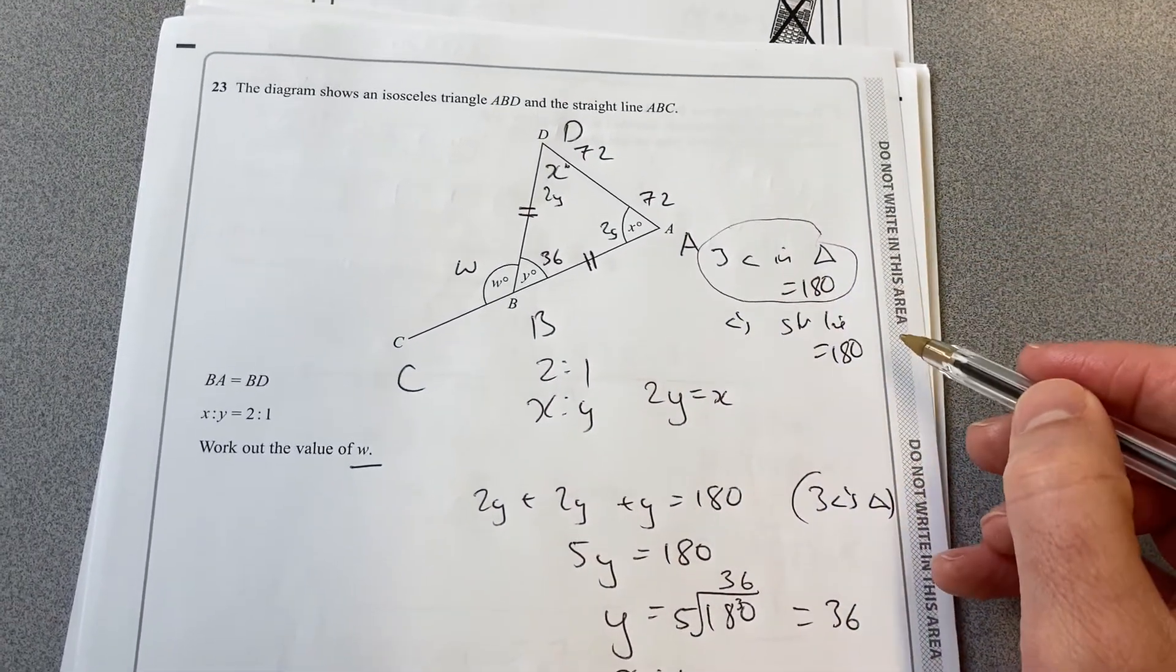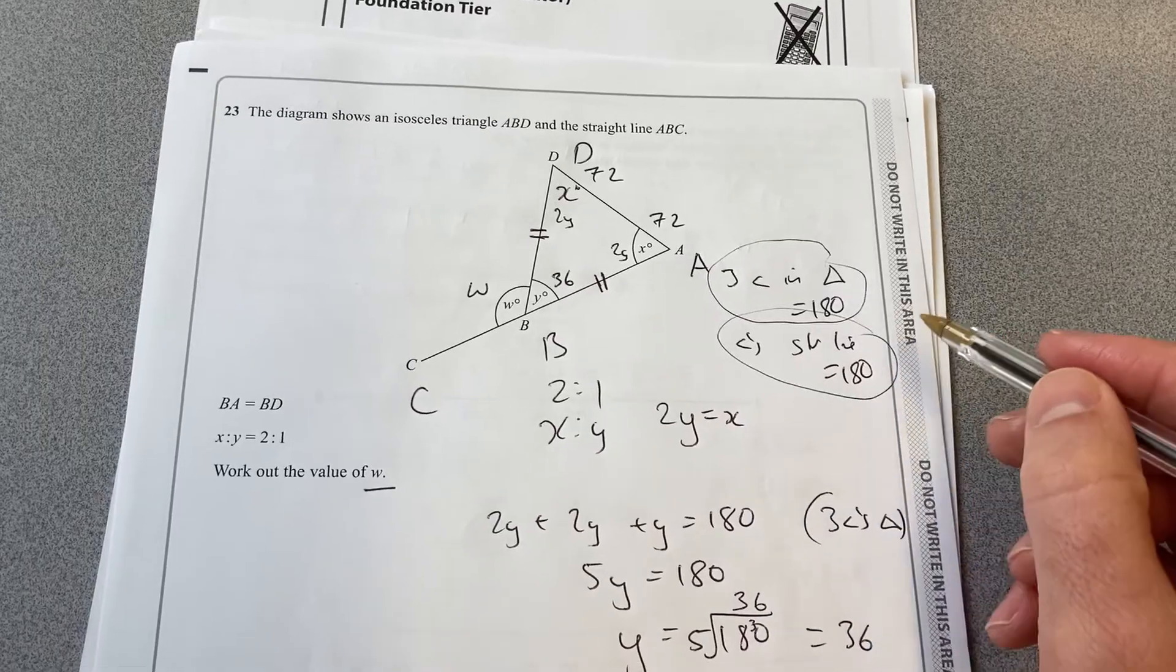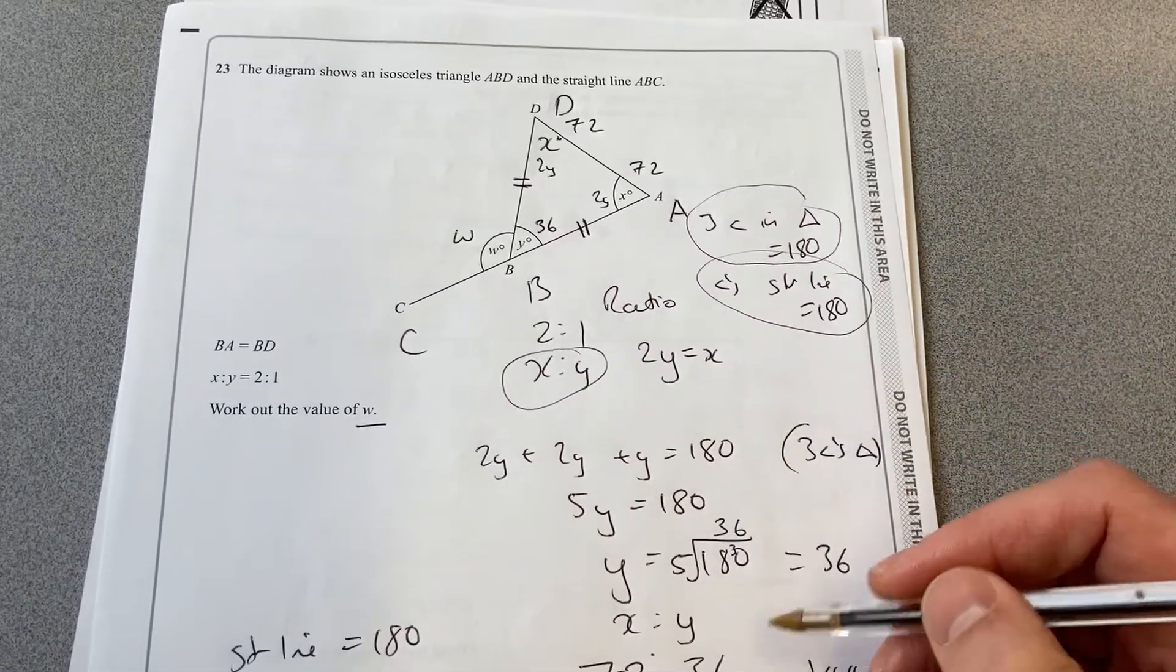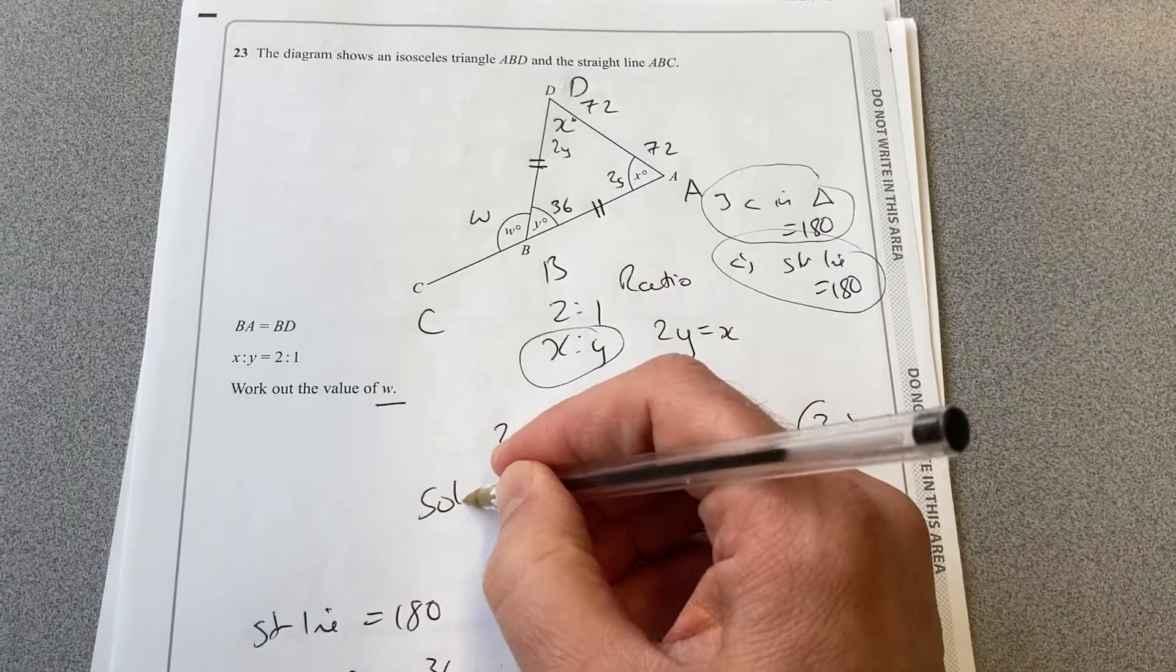The things you should be using: three angles in a triangle add up to 180, angles in a straight line add up to 180, and ratio. And then you set up an equation, and you solve that.